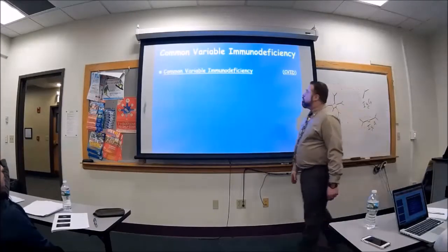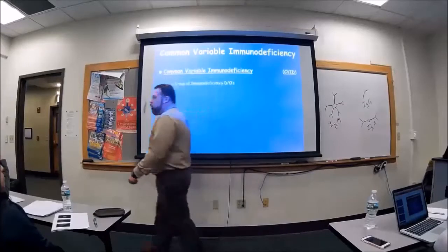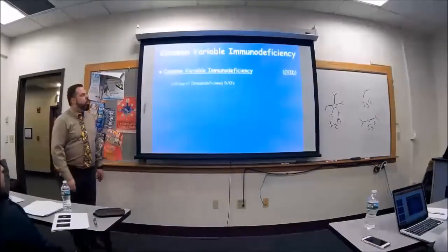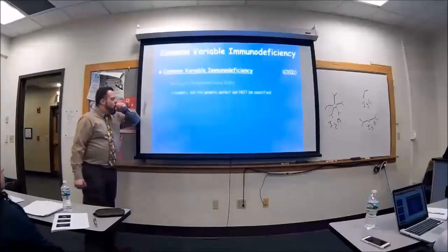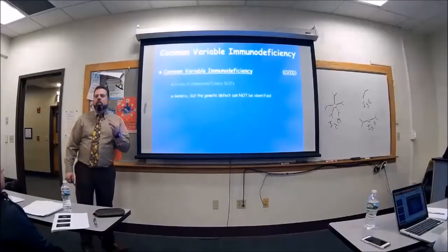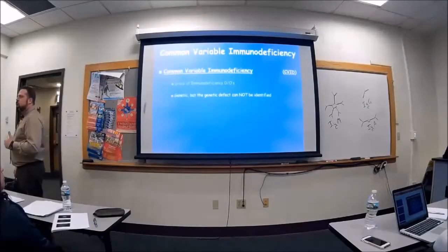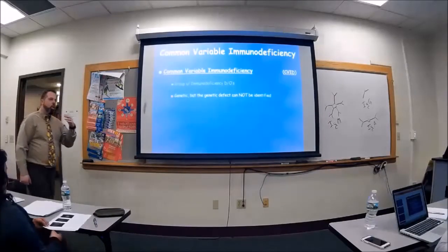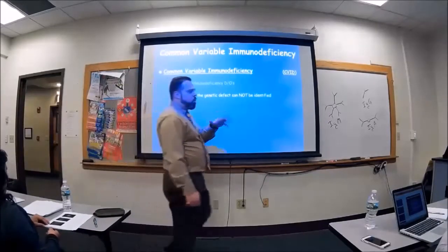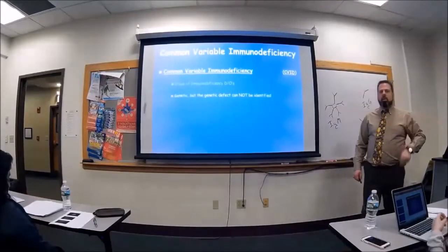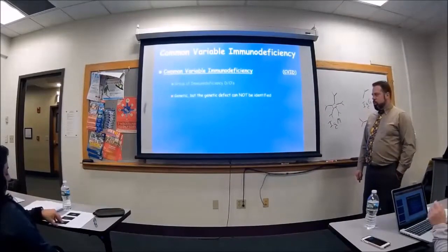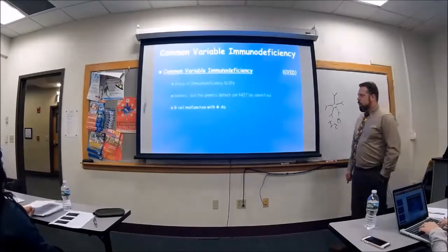And autoimmune diseases are also pretty common with them too. Common variable immunodeficiency. Basically, it's a group of immunodeficiency disorders. It's genetic. The problem is we just don't know where the gene is. We know that if it follows, if your mother has this, your sister has this, there's a good chance she will too. We just don't know where on the chromosomes it actually lies, the gene for this.